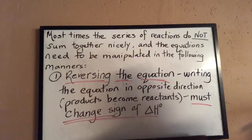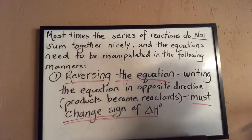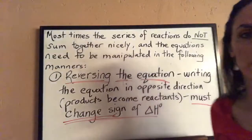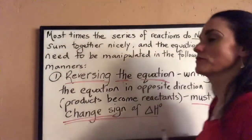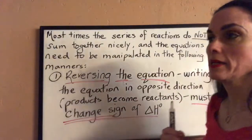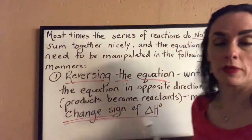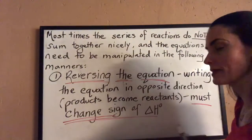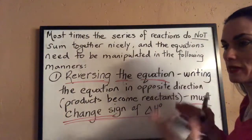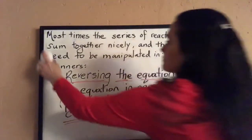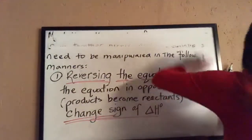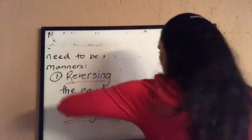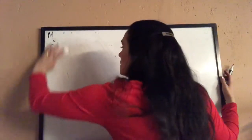The second thing we can do is cancel the formulas of compounds that are the same on both sides of the equation. They have to be in the same physical state — for example, water H₂O must be in the same phase on both sides. You can't cancel them out if they're in different states of matter.